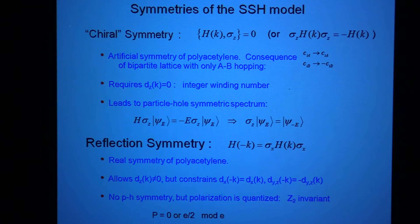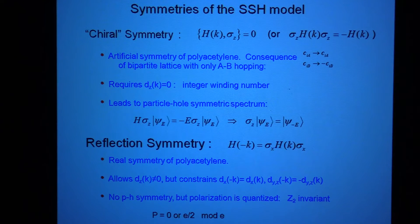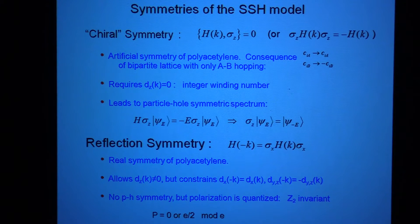Sometimes this is called a chiral symmetry. It's unlike a usual symmetry. Usually when you have a symmetry you think that defines an operator that commutes with the Hamiltonian. This chiral symmetry is actually an operator which anticommutes with the Hamiltonian. So if you have a Hamiltonian which only involves sigma x and sigma y, then it anticommutes with sigma z.